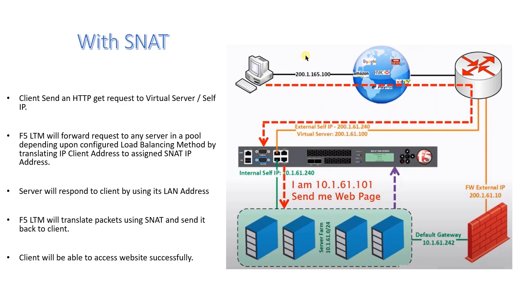In F5 BIG-IP LTM there are three choices for SNAT translation. The first is a specific IP address — where you specify an IP and instruct the system to translate the client IP to the assigned SNAT IP address. The second is self-IP address, known as automap. The third is an IP address from a SNAT pool list, where instead of a single IP you assign a pool list and instruct F5 BIG-IP LTM to translate the client address to one of the IPs in that pool list.